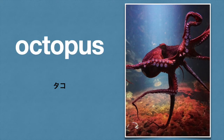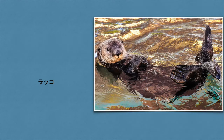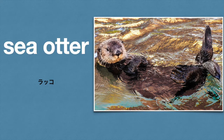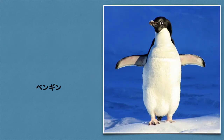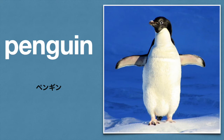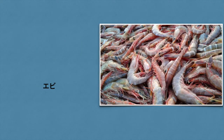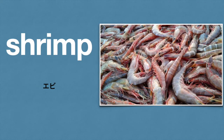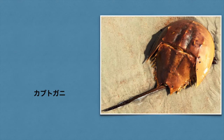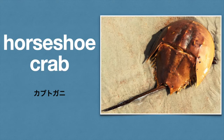What's this? Octopus. What's this? Sea Otter. Sea Otter. What's this? Penguin. What's this? Shrimp. What's this? Horseshoe Crab. Horseshoe Crab. Horseshoe Crab. Jellyfish. Jellyfish.